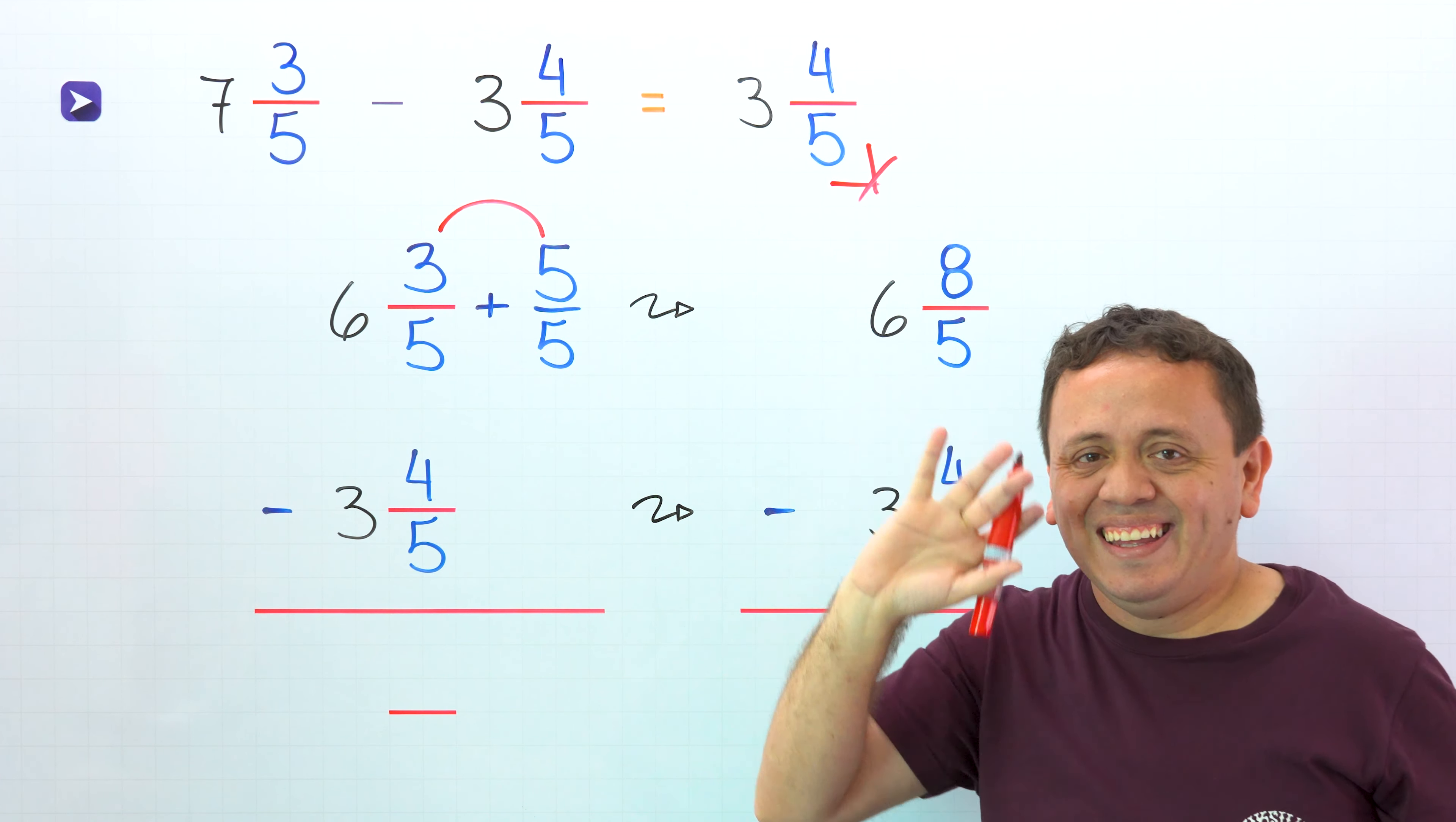Next, we have 6, and now we need to add these two fractions with like denominators. 5 fifths plus 3 fifths. We continue by adding the numerators, and 3 plus 5 gives us 8.